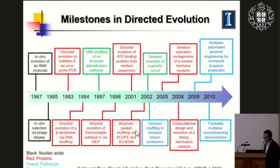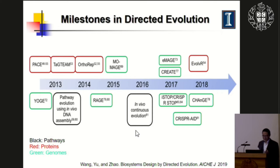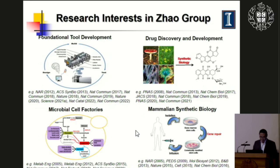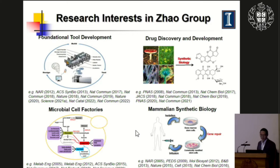In my lab — just like the first speaker mentioned — we're focused on synthetic biology. We're interested in developing new synthetic biology tools for many different applications, many in the form of a biofoundry. We also develop enzyme engineering and genome engineering tools based on CRISPR or TALENs. We apply this technology platform for three main applications: drug discovery and development, engineering microbial cell factories for production of chemicals and materials, and engineering cells for gene therapy or studying chromatin structure and dynamics.